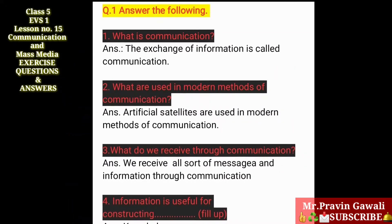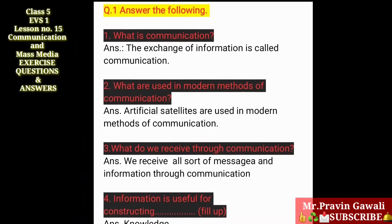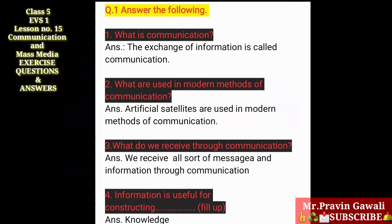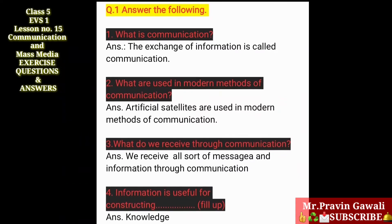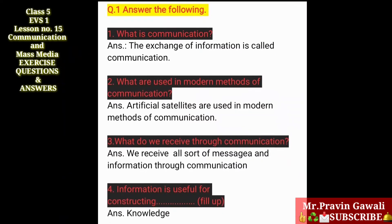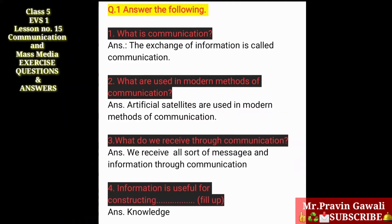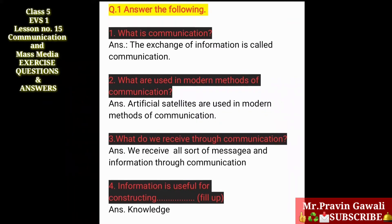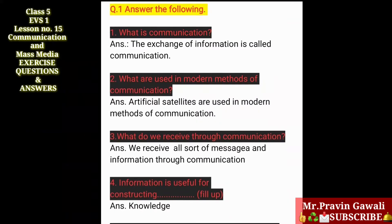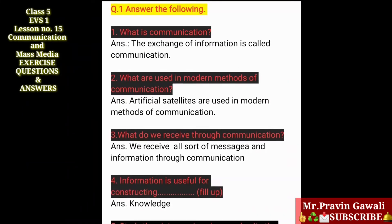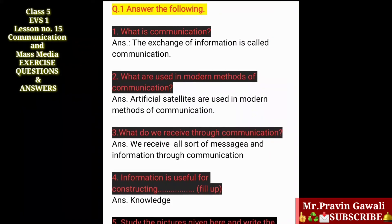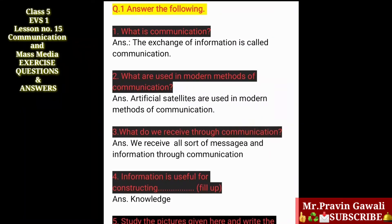Two — what are used in modern methods of communication? The answer is: artificial satellites are used in modern methods of communication. Three — what do we receive through communication? The answer is: we receive all sorts of messages and information through communication.